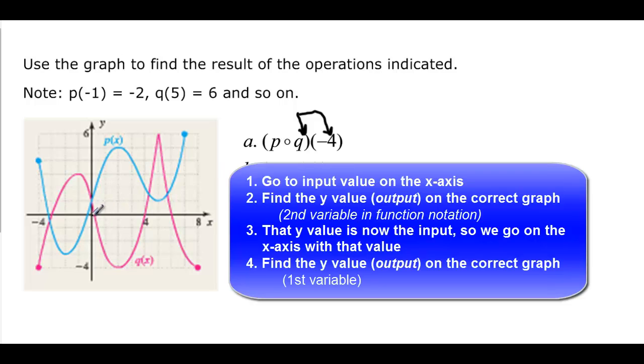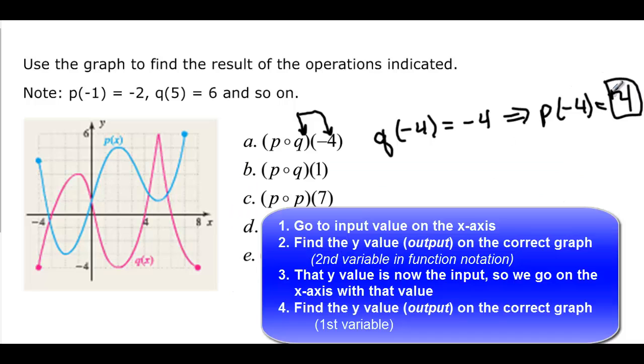So I come to q, q is pink by the way, I come over to negative 4, that's the input. So negative 4 is my input, and q of negative 4 is going to be equal to... q is down here so I have negative 4. So that means that I'm going to do p of negative 4. So I'm still at negative 4, I go back up to negative 4 because now that's my input, and I go and find my p function, and it tells me that it's equal to positive 4. That's a positive 4.